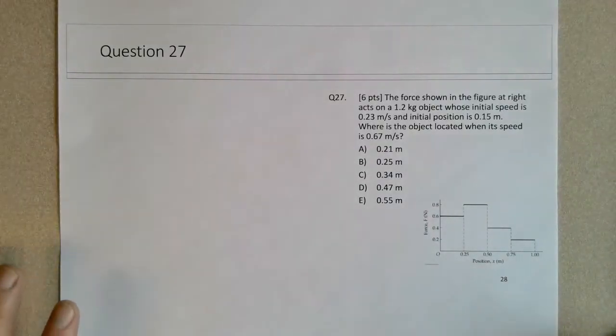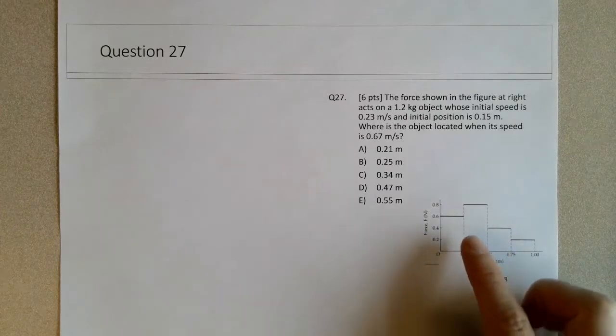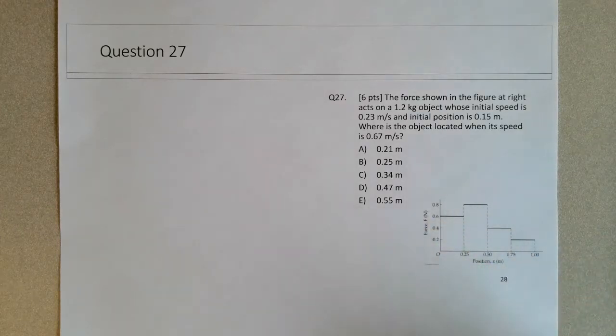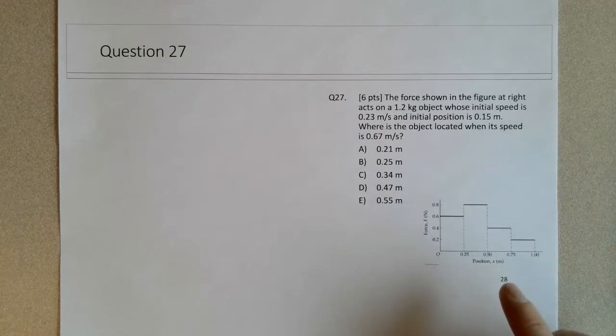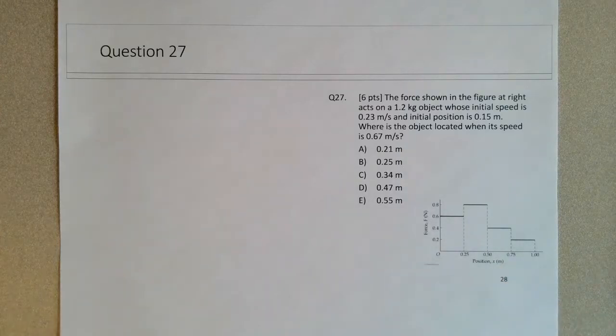Okay, so question 27. We're given a force-position curve with a variable force that's constant for different distances but varies over the entire 1 meter. It's acting on a 1.2 kg object whose initial speed is 0.23 m/s and initial position is 0.15 m. We need to find the object's location when its speed is 0.67 m/s.